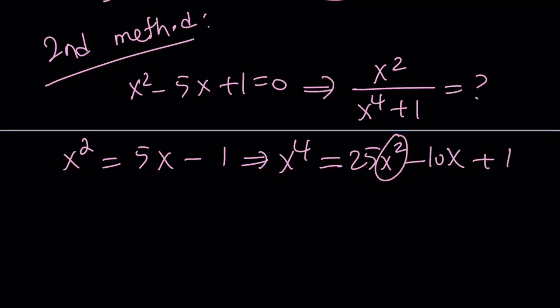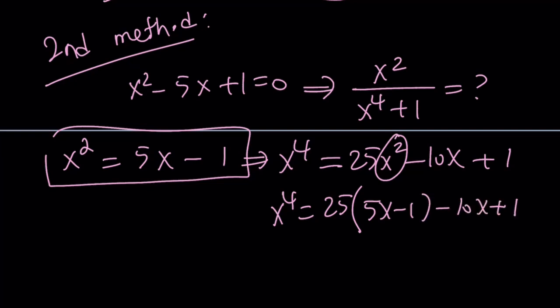And then x squared obviously can be replaced by 5x minus 1 one more time. So x to the 4th can be written as 25 times the quantity 5x minus 1 minus 10x plus 1 from here. And from here, x to the 4th becomes 25 times 5x, which is 125x. Minus 10x is 115x. Minus 25 plus 1 is minus 24.